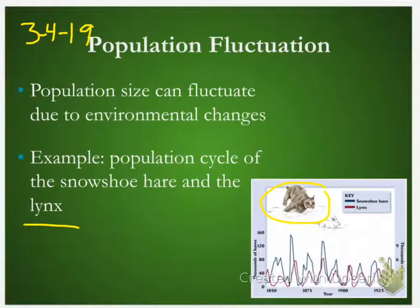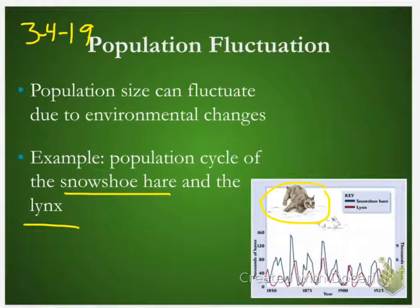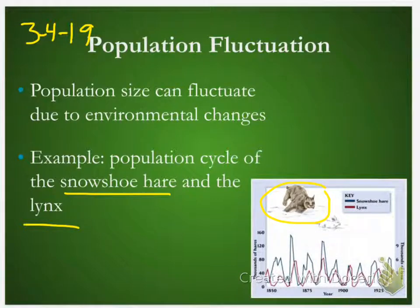One of their primary food sources, one of the primary prey species that they eat, are snowshoe hares. Snowshoe hares are a rabbit species. They change color in the winter, which is kind of cool — they have a white winter coat and a brown summer coat. They're a great example of evolving to fit your environment.